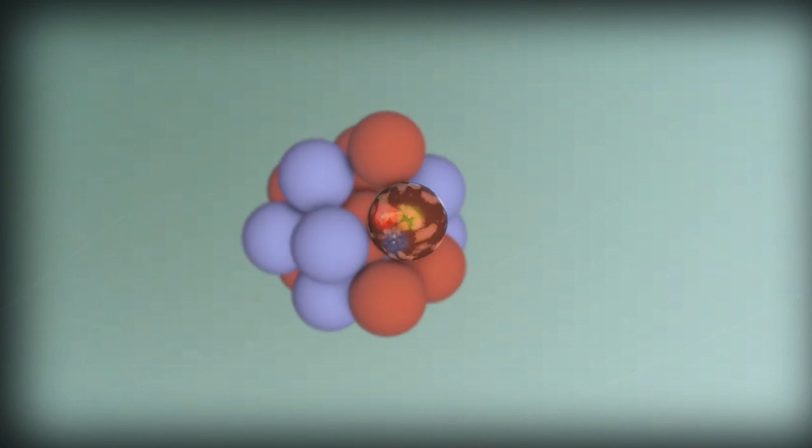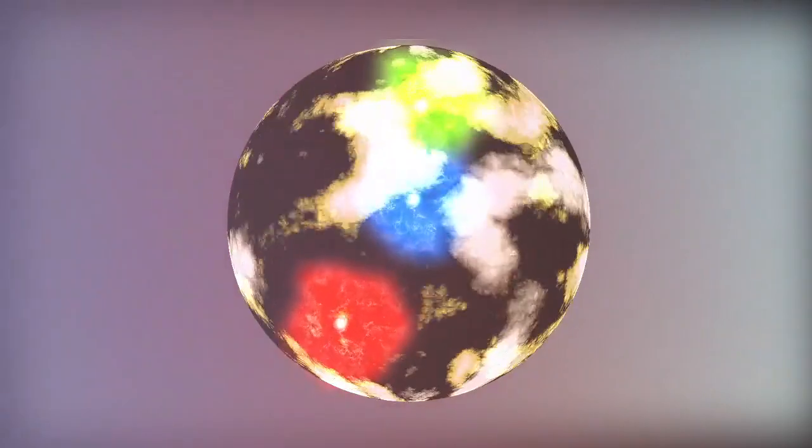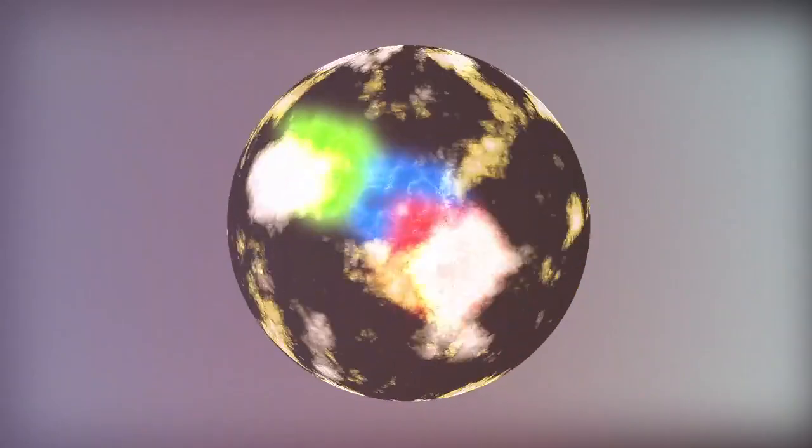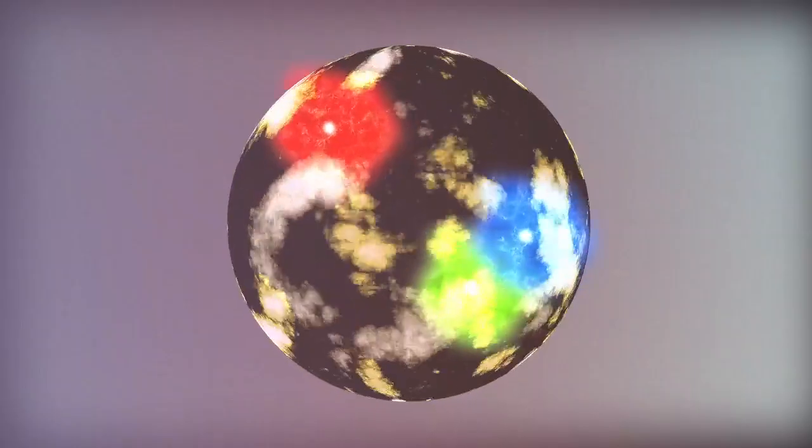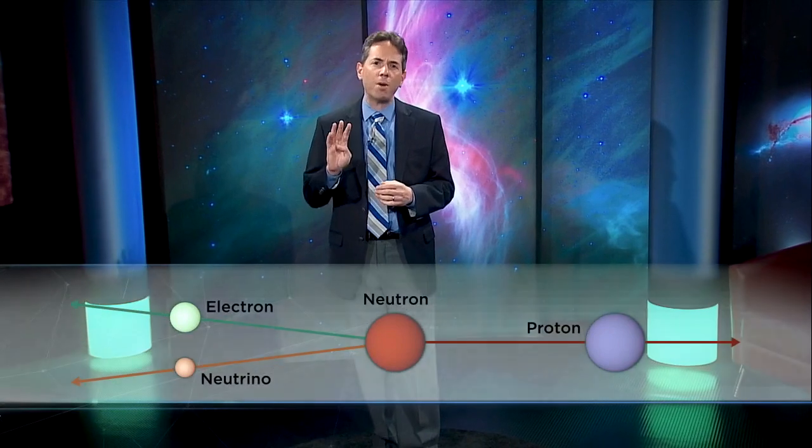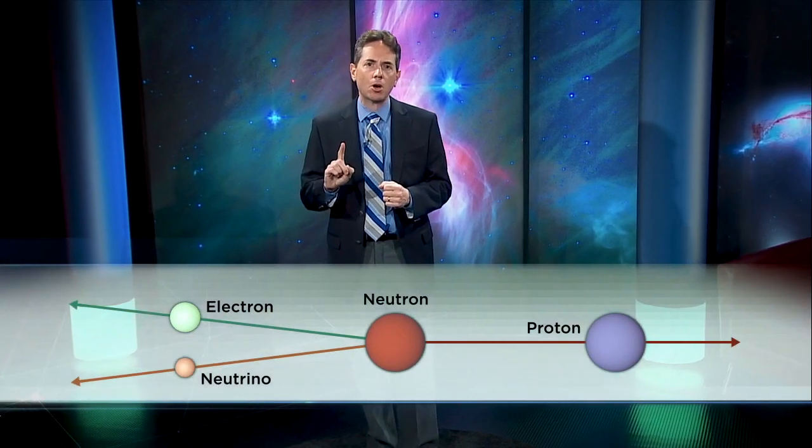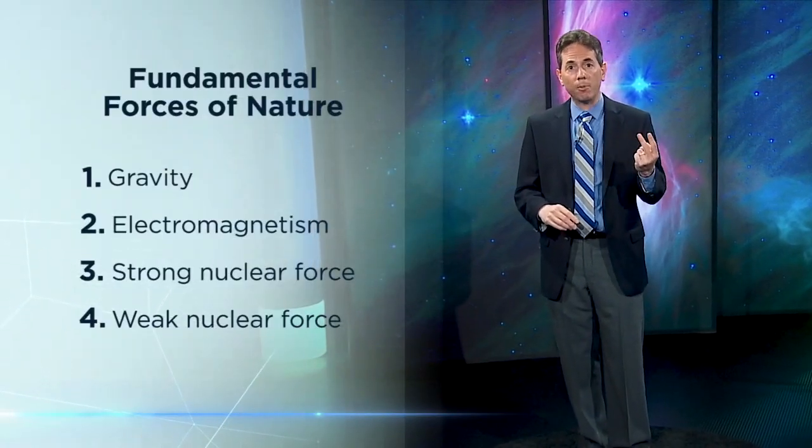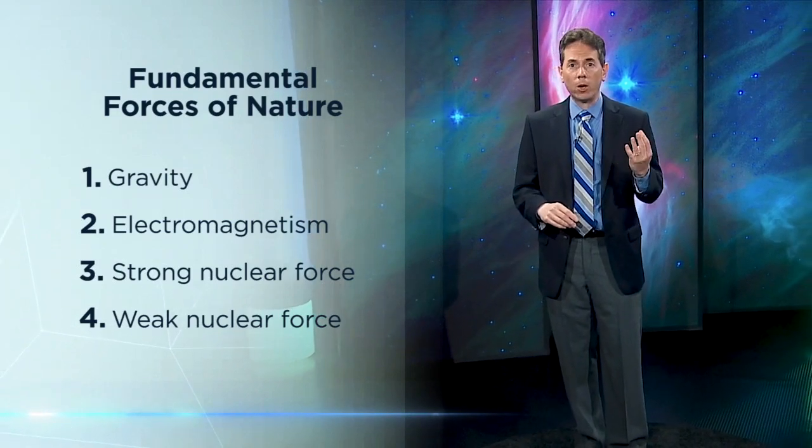Zooming in further, inside the proton, things get very hectic. There are quarks within a sea of particles called gluons, and everything's in motion, particles appearing and disappearing. But that's a step further than we need to go for this course. So let's just stop here and reflect on what we've seen. We've met four particles—the electron, proton, neutron, and neutrino—and four forces—gravity, electromagnetism, the strong nuclear force, and the weak one.